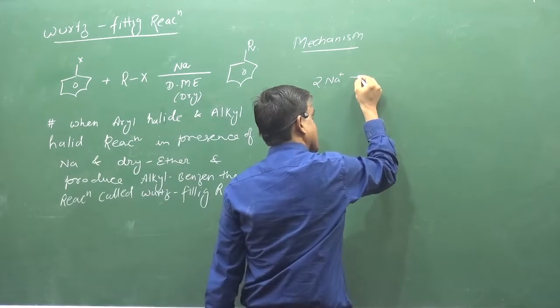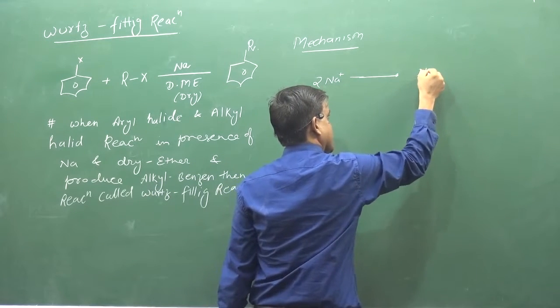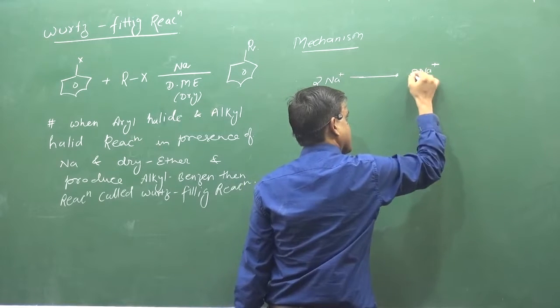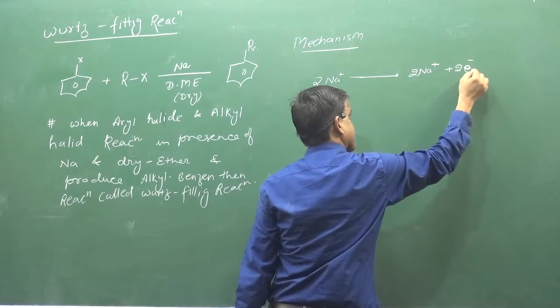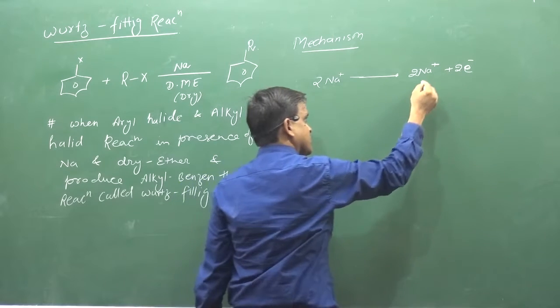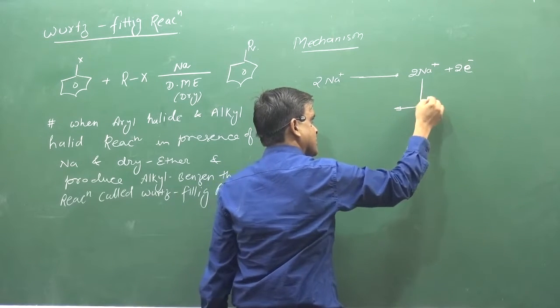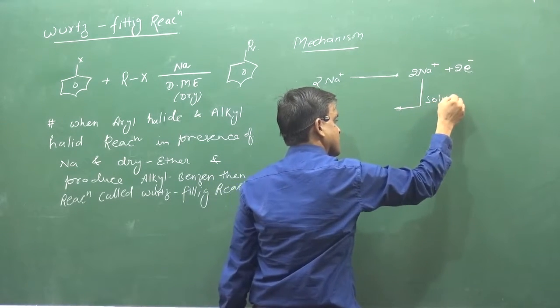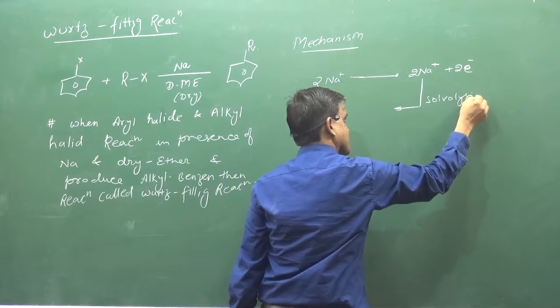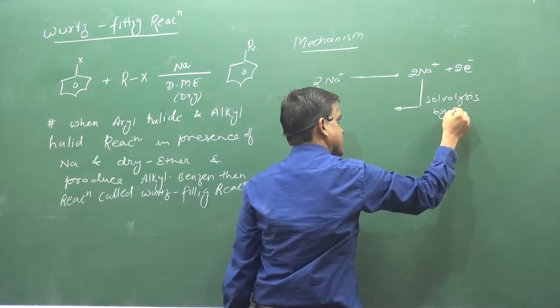Na plus and two electrons come out and sodium is solvated by ether